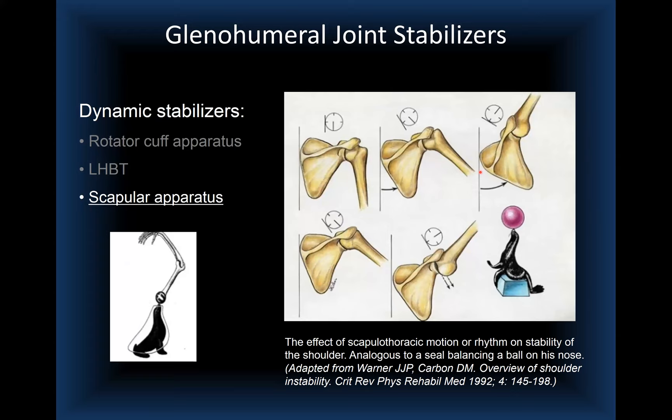If scapulothoracic upward rotation is not normal and lags behind glenohumeral joint motion — mainly abduction — the socket will not remain underneath the humeral head throughout the full range of motion. The result is the humeral head pulling off the socket, like the ball slipping off the seal's nose.